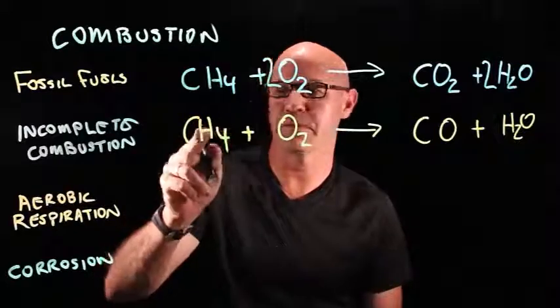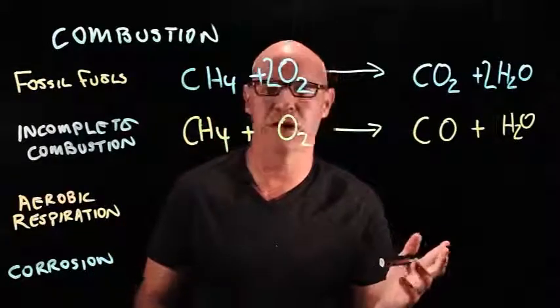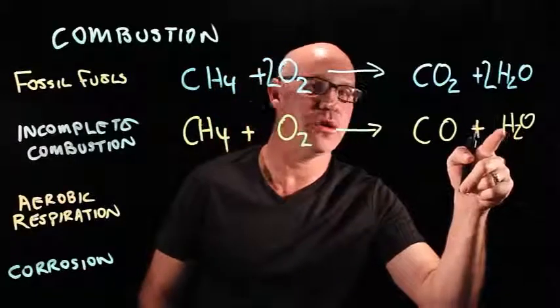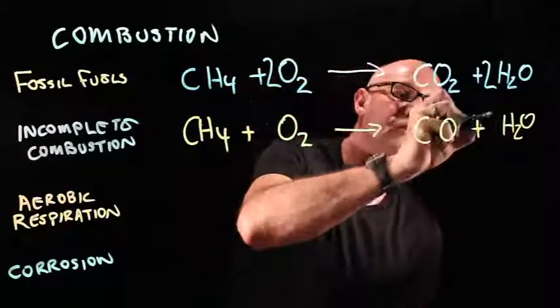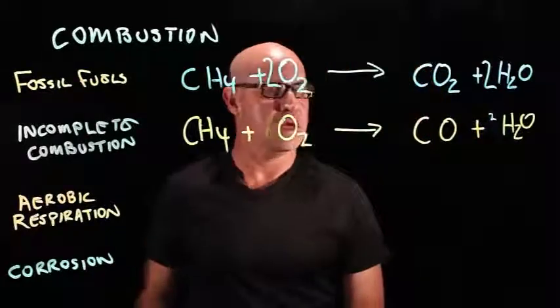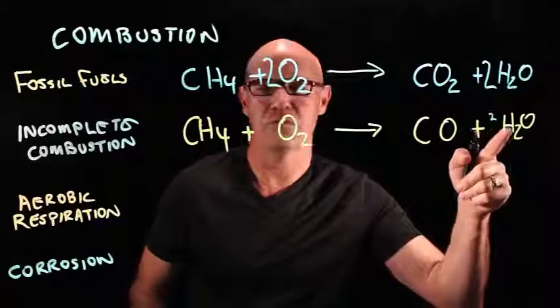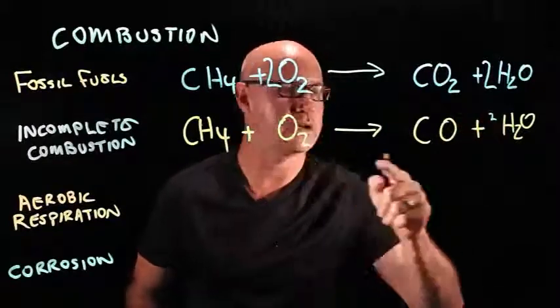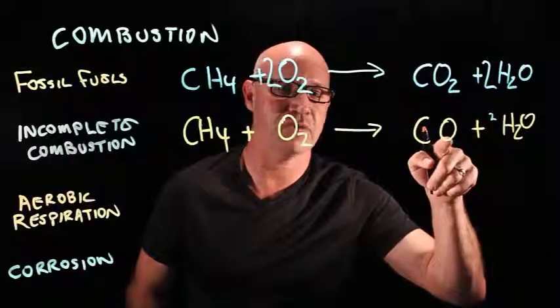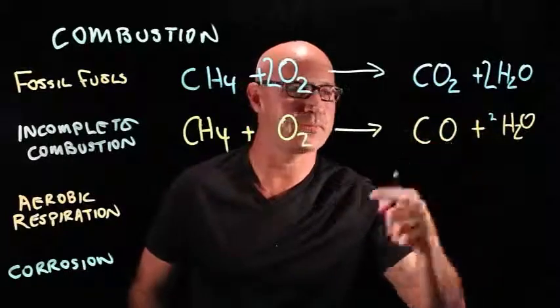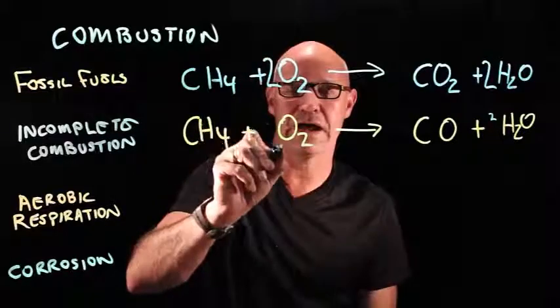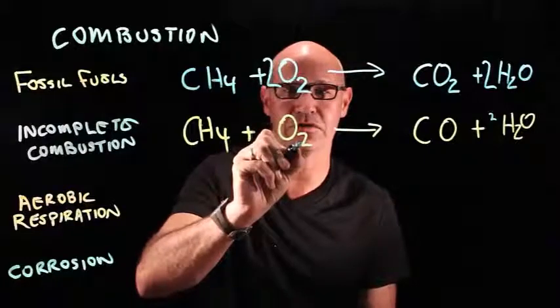So we start with one carbon and one carbon, so that's fine. But we've got four hydrogens here and two hydrogens here. So I expect we're going to have to do more than this so let's just put a little two there to help us out. Let's see if we need to do more. So now we've got four hydrogens. How many oxygens? Two oxygen here plus another oxygen so that's three.